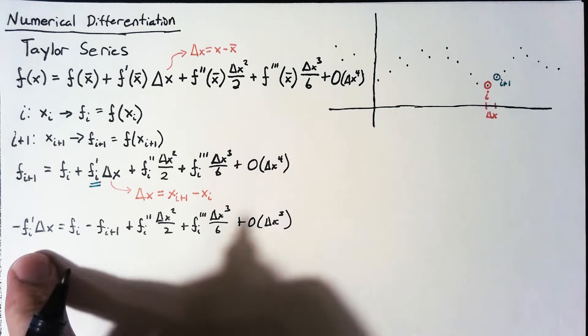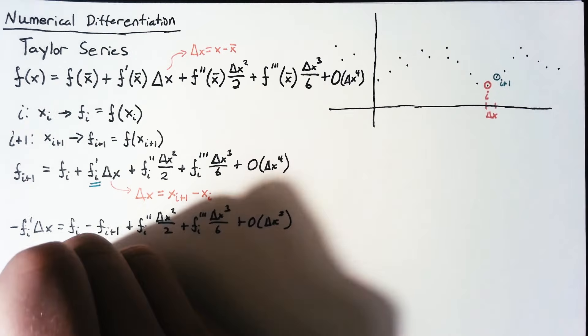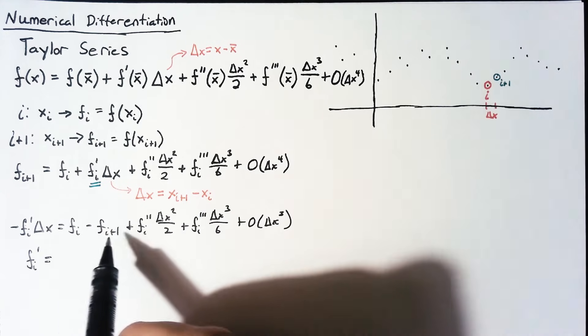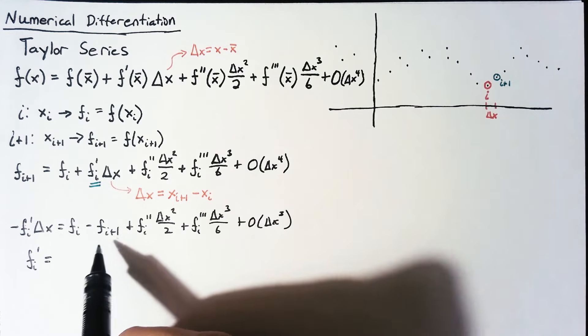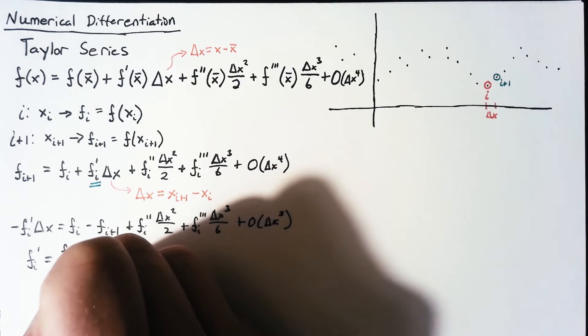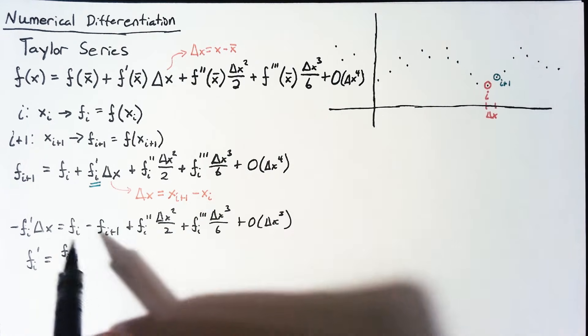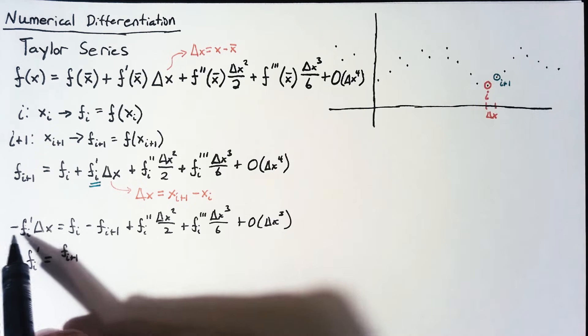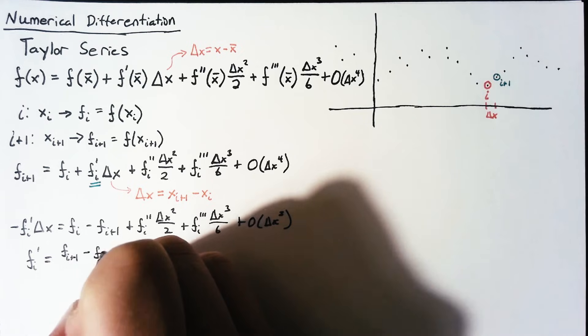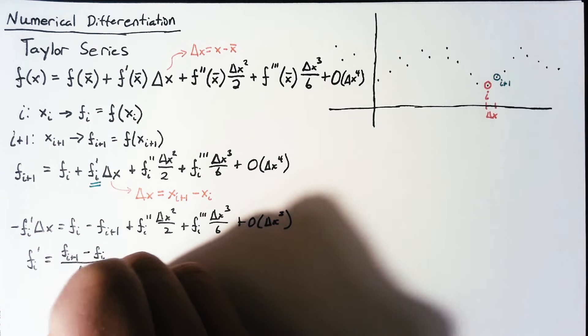So finally, we go ahead and solve for fi prime. And we end up with these first two terms divided by delta x. So this is fi plus 1, which the sign has been switched because we're dividing through by negative delta x, minus f of i divided by delta x.